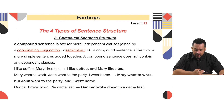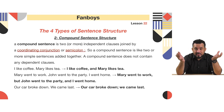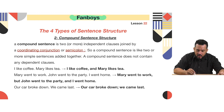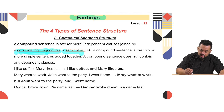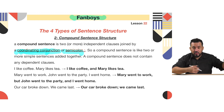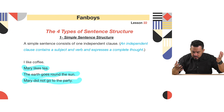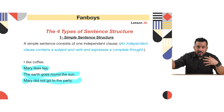Now let's take a look at a compound sentence. A compound sentence is basically two simple sentences joined together with something we call a FANBOY. A compound sentence is two or more independent clauses joined by a coordinating conjunction or a semicolon. A coordinating conjunction connects those two simple sentences — one sentence with a subject, a verb, and a complete thought, and another simple sentence with a subject, a verb, and a complete thought.